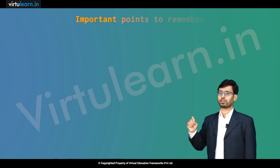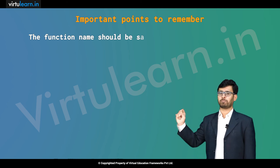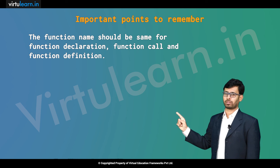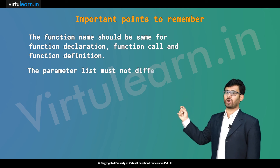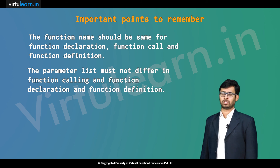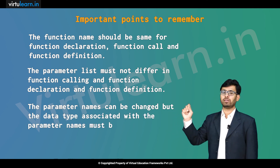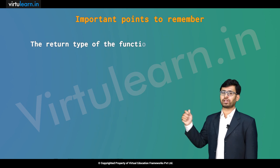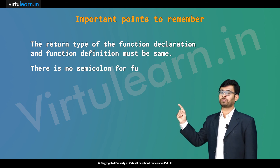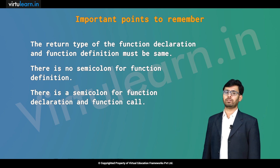The very important points to remember as part of these three aspects are: the function name should be the same for function declaration, function call, and function definition. The parameter list must not differ in function declaration, function call, and function definition. The parameter names can be changed, but the data type associated with the parameter names must be the same. The return type of function declaration and function definition must be the same. There is no semicolon for function definition, but there is a semicolon for function declaration and function call.